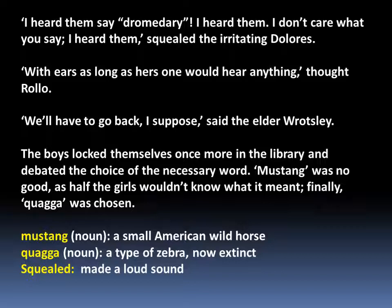Dollars said, 'They said dromedary — I don't care what you say, I heard them.' With ears as long as hers, one would hear anything, thought Rolo. 'We will have to go back, I suppose,' said the elder Rosley. The boys went back to the library and debated — they chose 'Mustang' but it was rejected as many wouldn't know it, so finally 'Kaga' was chosen — a type of zebra, now extinct.